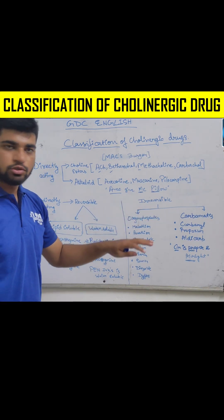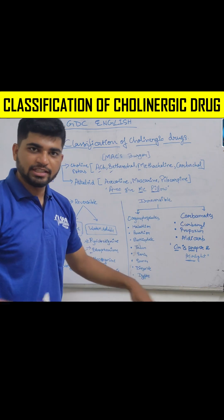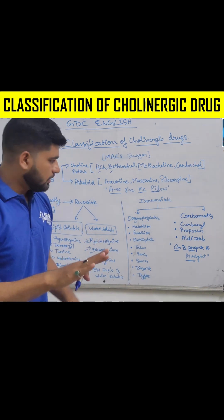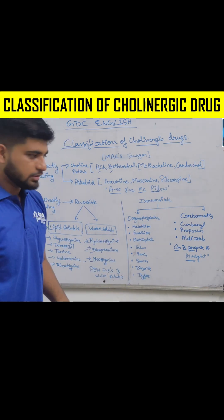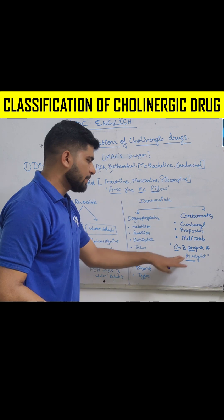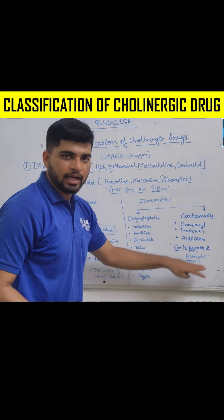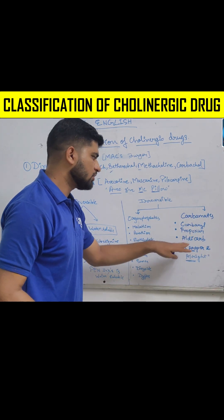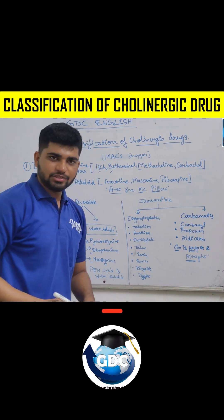Irreversible — you can learn through carbamates only; the rest of the drugs fall automatically under organophosphates. Carbamates mnemonic: Car — Carbaryl, Propoxur, and Neostigmine analogs.